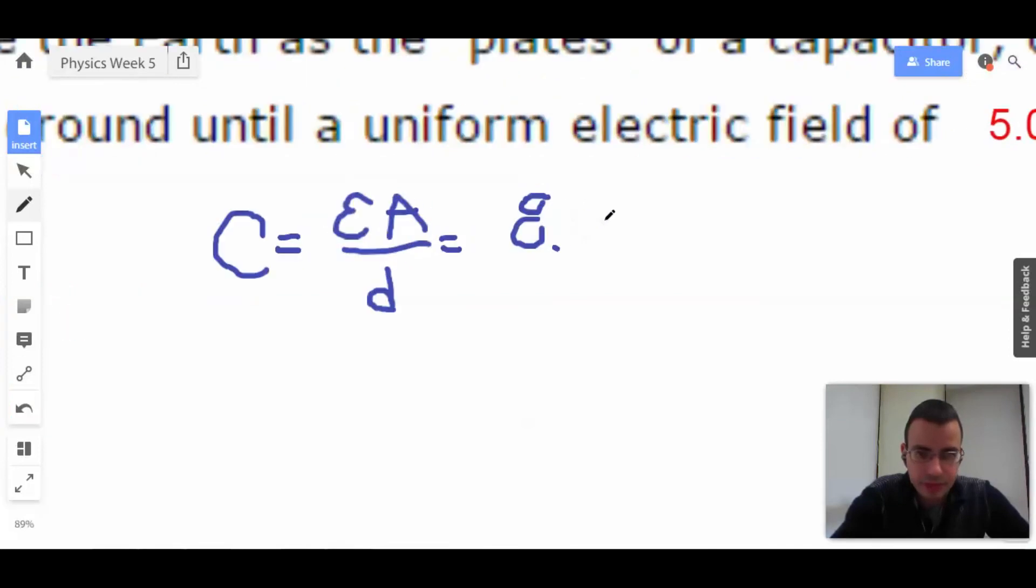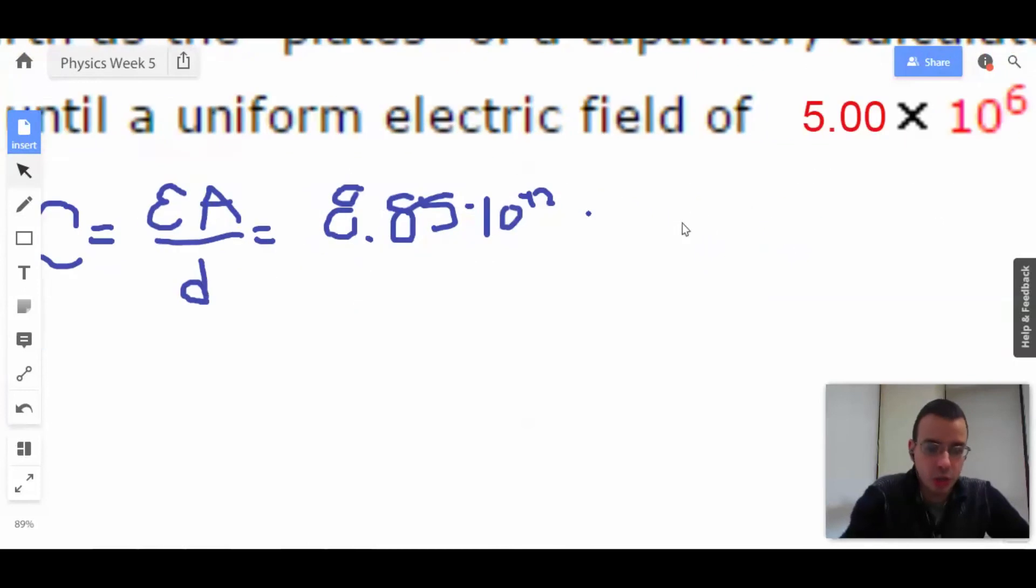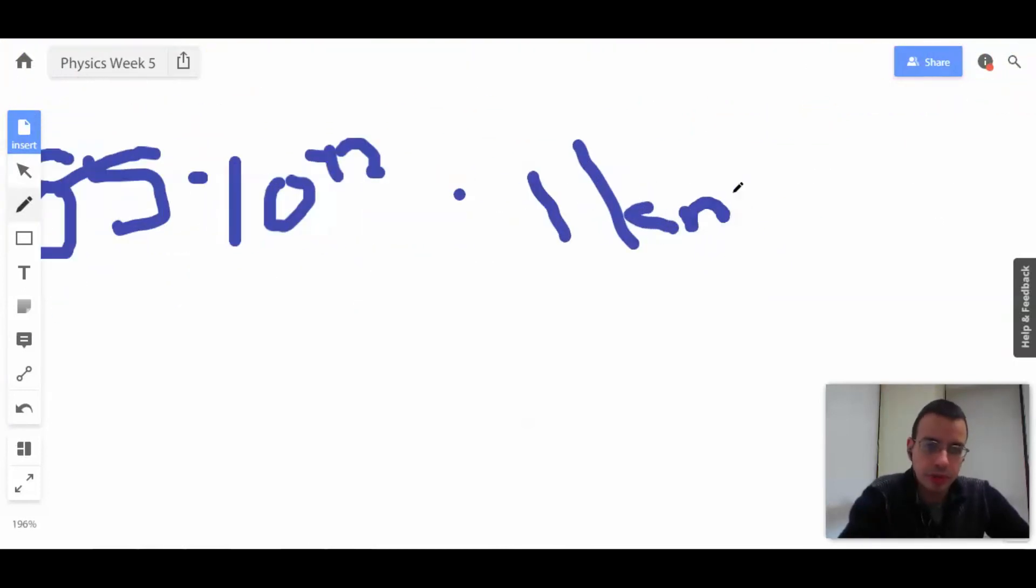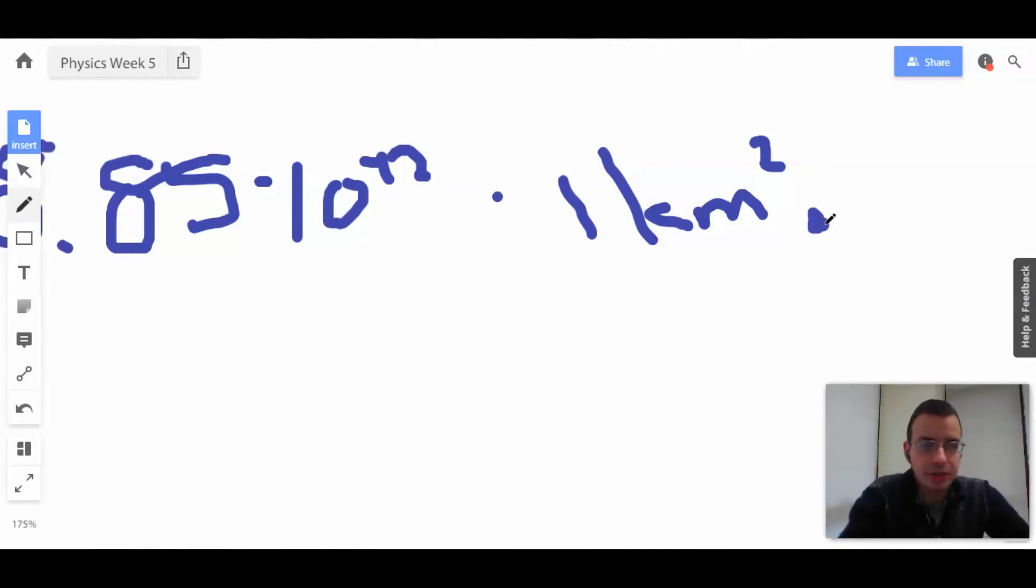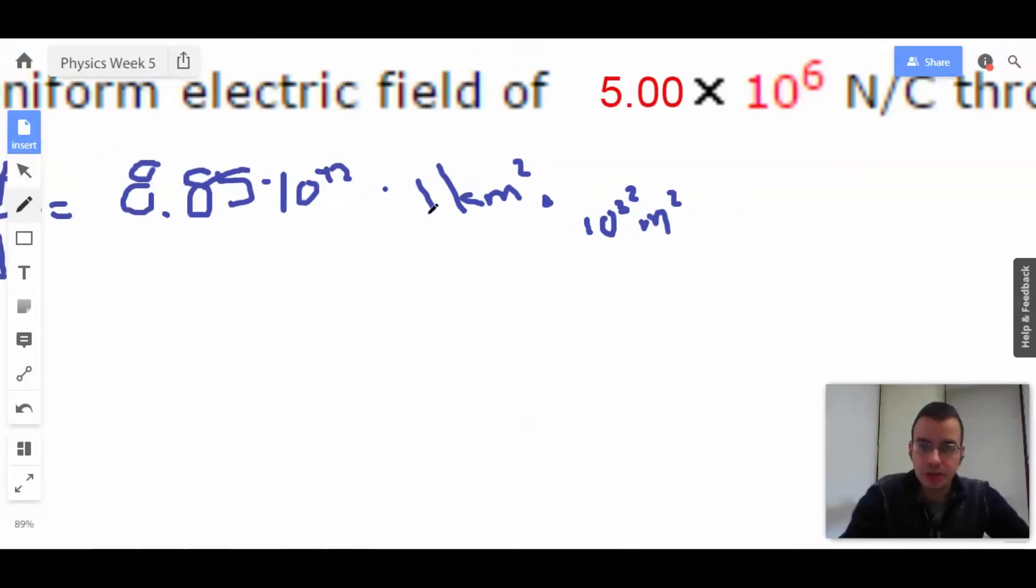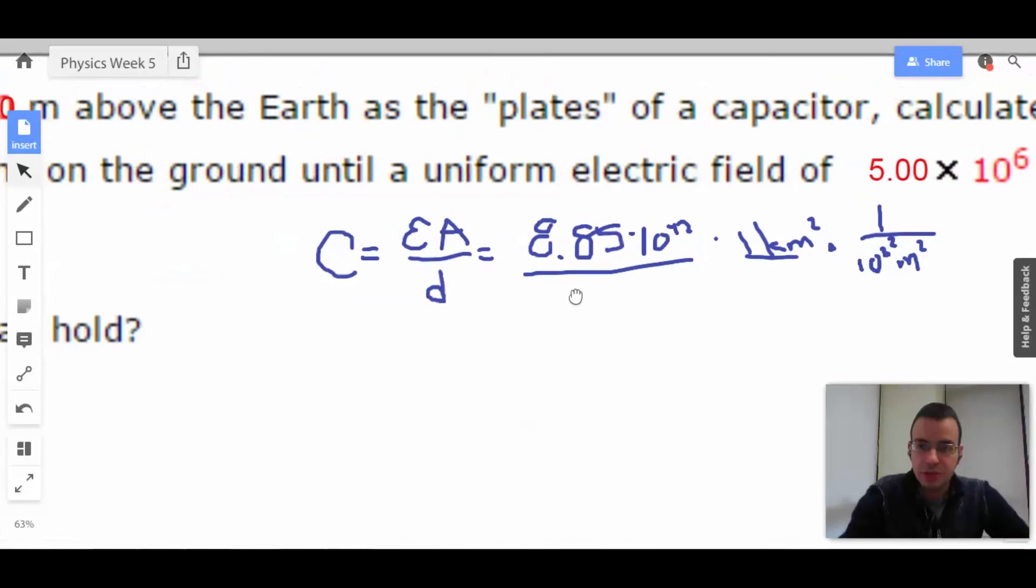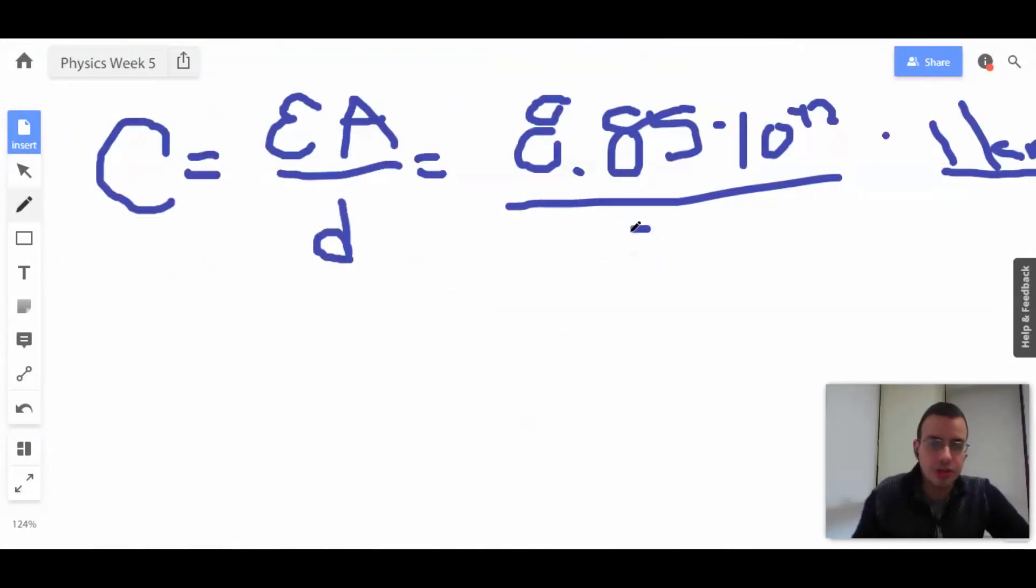So we've got 8.85. That's 10 to the third meters. And 1 kilometer, but we have square kilometers, so we're actually going to turn it into 10 to the sixth meters squared. Probably should make some lines, do the railroad tracks thing. So that gives us meters. Good SI units. And then the distance between the two is 800 meters. So this will just be 800. Perfect.